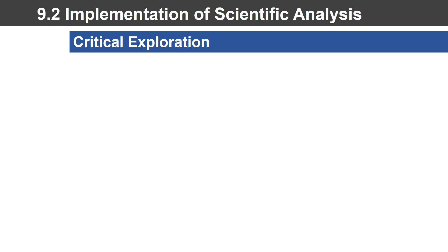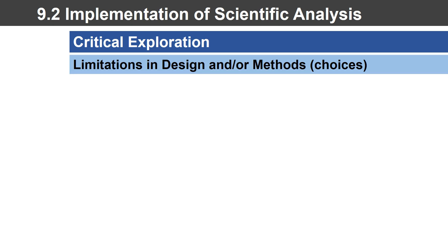If you didn't think of those things as you parsed through the intro and the discussion, that's okay — this is a skill that comes with time and practice. We're going to now explore the second component of the paper anatomy, which is the overall experimental design and the materials and methods. We're going to look for limitations in them.